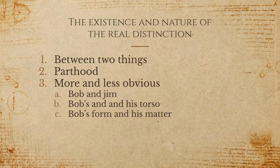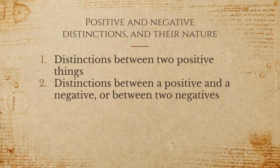Then there are more and less obvious real distinctions — like the distinction between Bob and Jim, the distinction between Bob and his torso, and the distinction between Bob's form and Bob's matter. There are multiple kinds of real distinctions. Some of them are positive and some of them are negative. Distinctions that are positive are between two positive things, like the distinction between Bob's torso and Bob's head, or between Bob's form and Bob's matter. Then there's the negative distinction, which is between a positive and a negative, or between two negatives, like a distinction between Bob's blindness and Bob's skull, or between Bob's lack of a leg and Bob's torso.